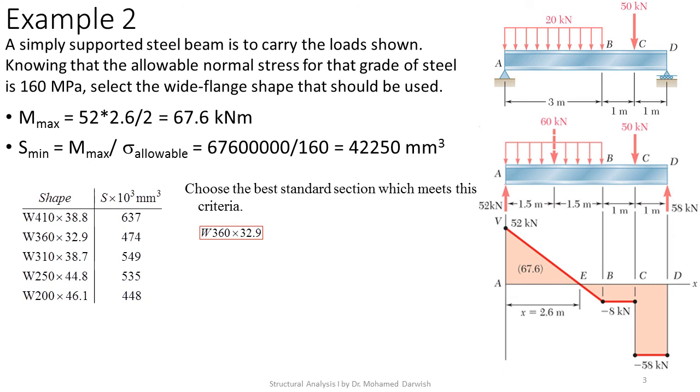We'll go to one of these tables, the standard sections, and we will look at, we'll search for the section modulus. We could find 637,000, 474,000, 549,000. So we will get the section that has the section modulus that is just above the value that we need, which is the section having the 474,000 mm³.